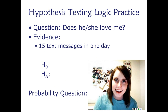We can apply this logic to other situations. Wonder if a person you're interested in loves you — the evidence is you got 15 text messages from them in one day. The null hypothesis is they don't love me; the alternative is they do love me. The counterfactual probability question is: if this person didn't love me, what's the probability that they would send me 15 or more text messages in one day?